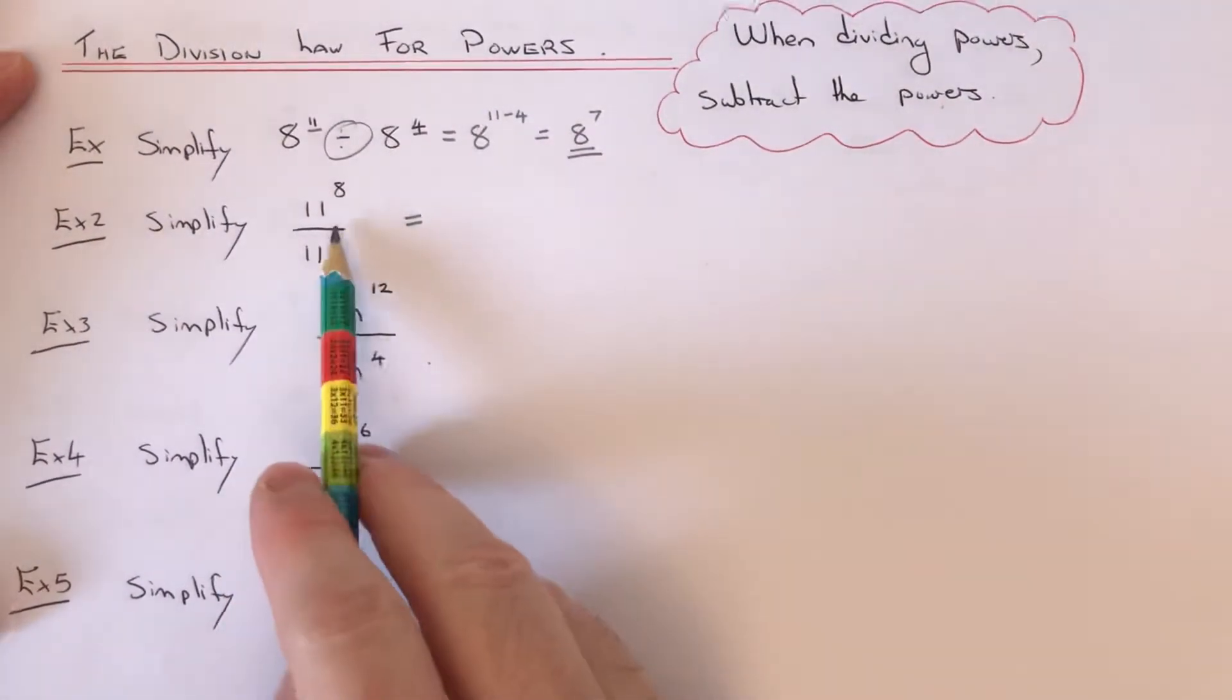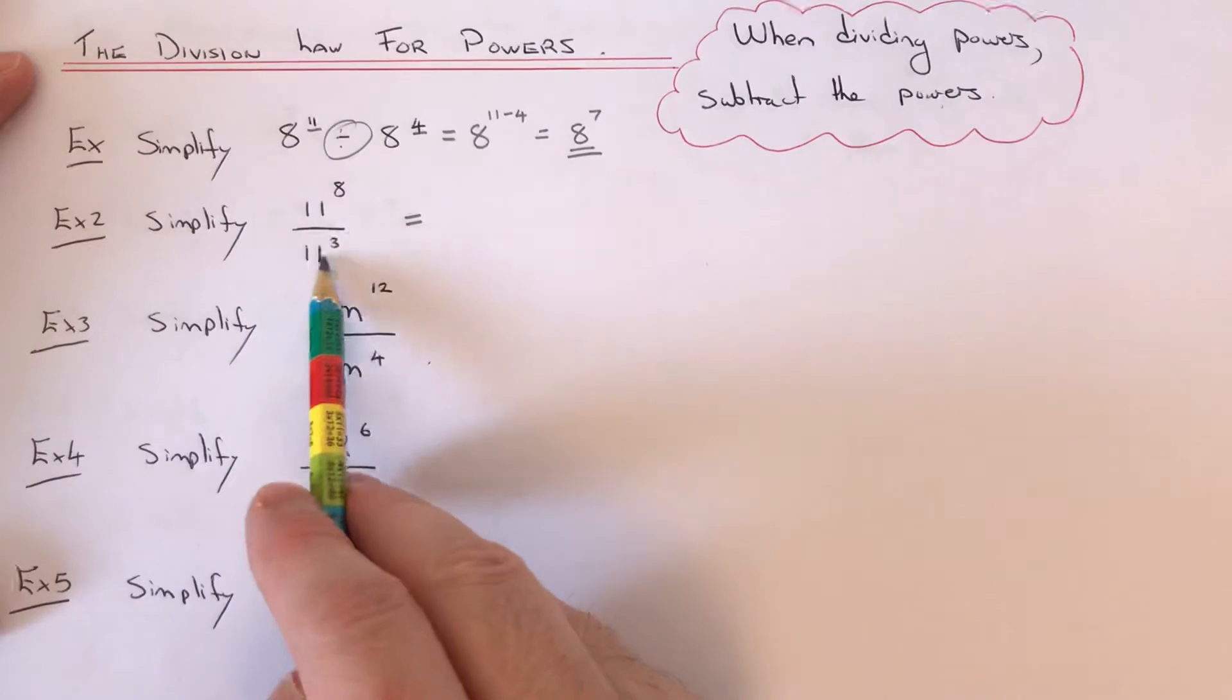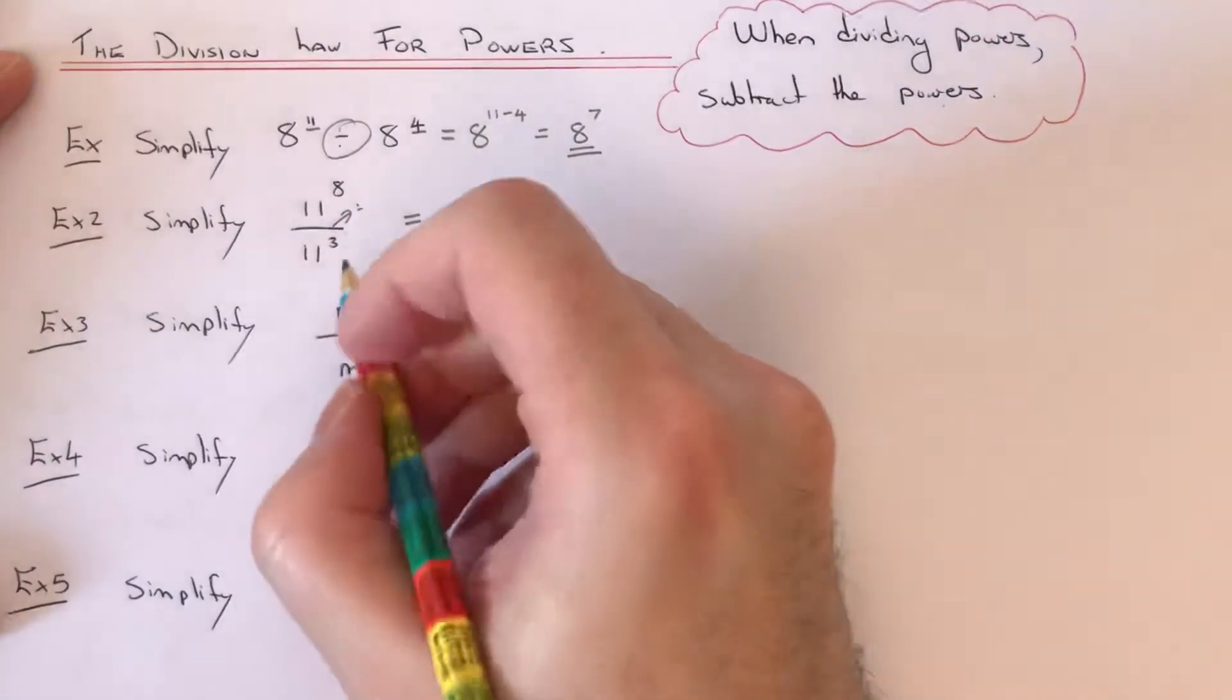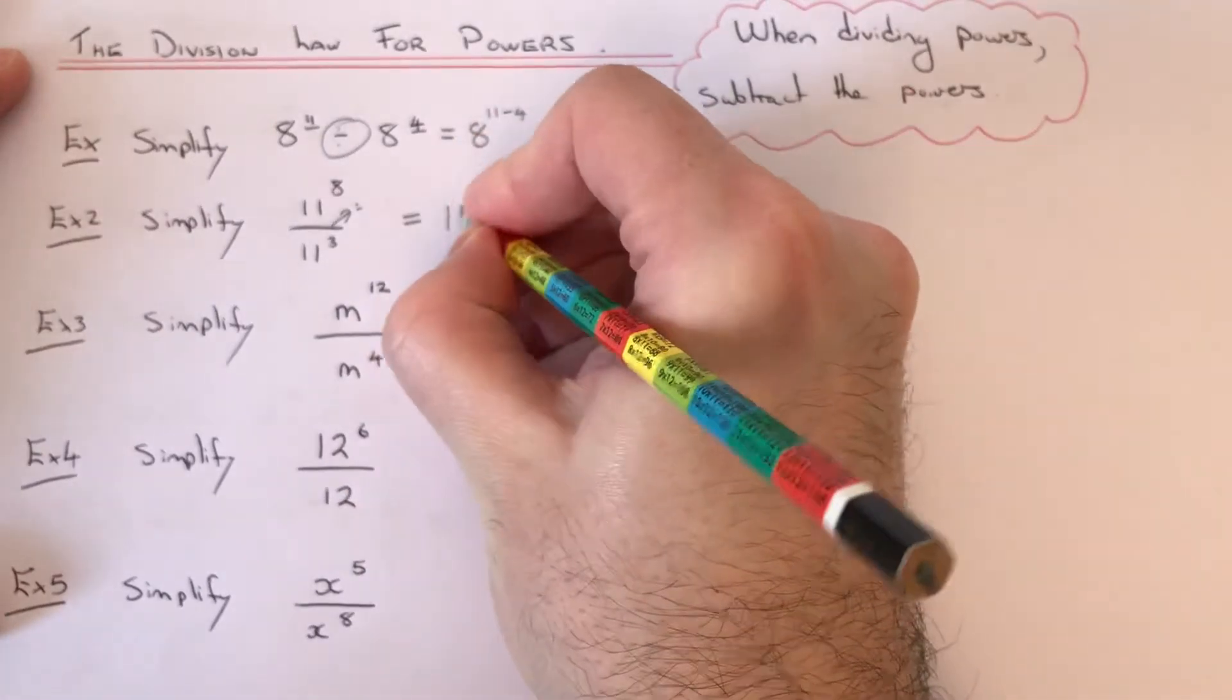Let's do the second example. We've got 11 to the power of 8 divided by 11 cubed. That line means divide. Again, we're dividing, so we take the powers away.